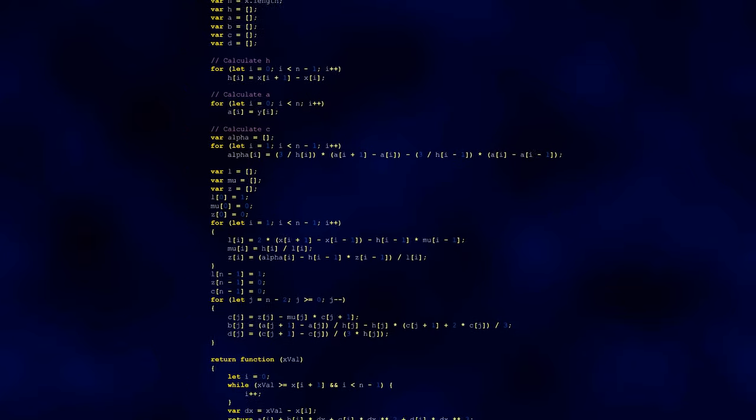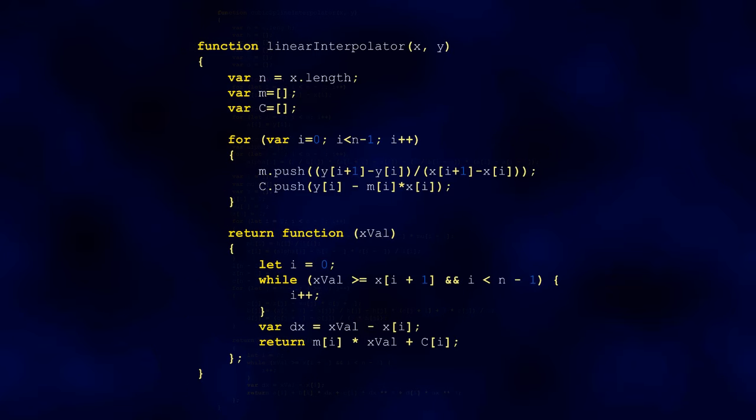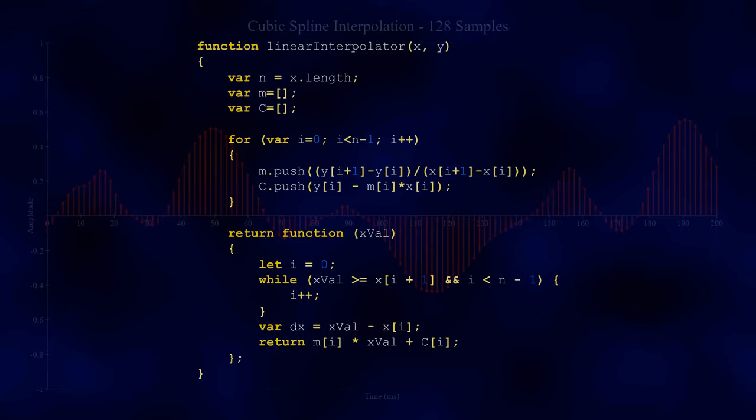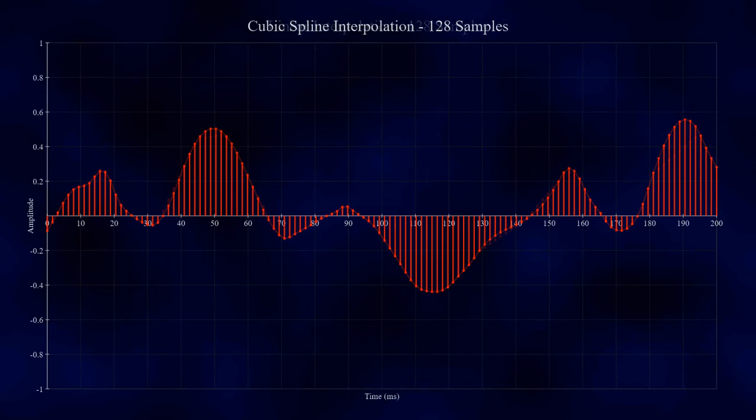If you're stuck for processing power though, you could go for a linear interpolation, which, while being slightly less accurate, can still give you excellent results, especially if the jump to the nearest power of 2 samples isn't too large.